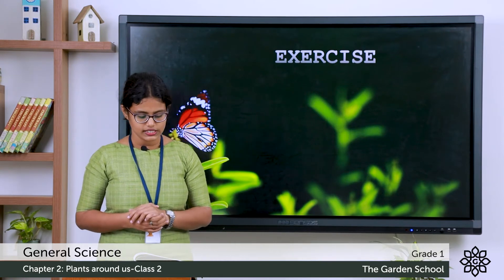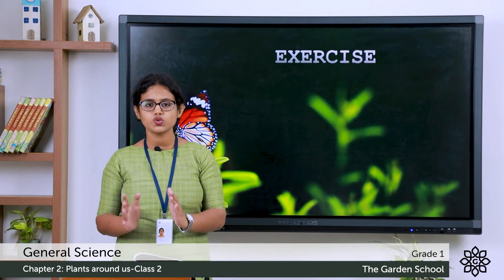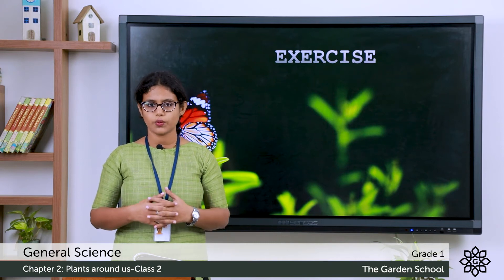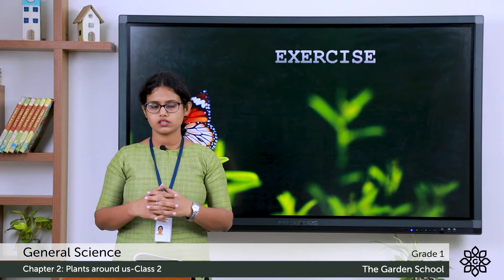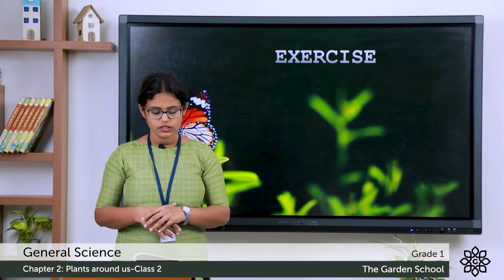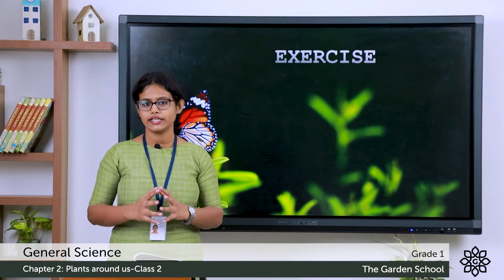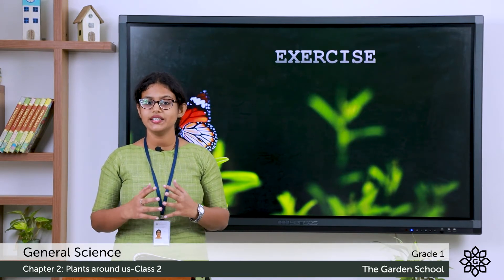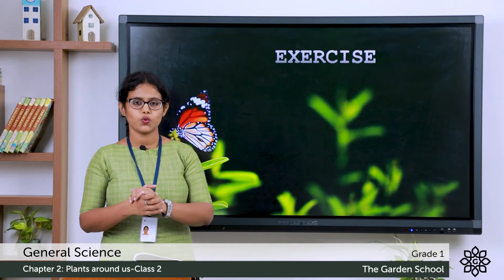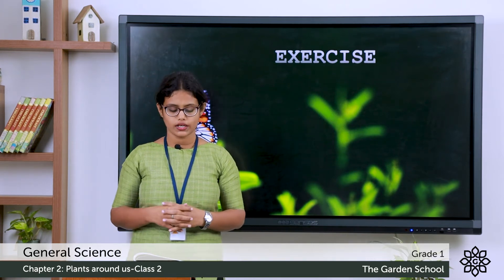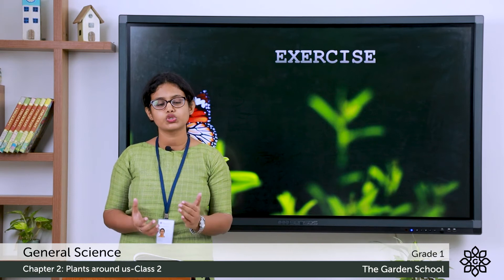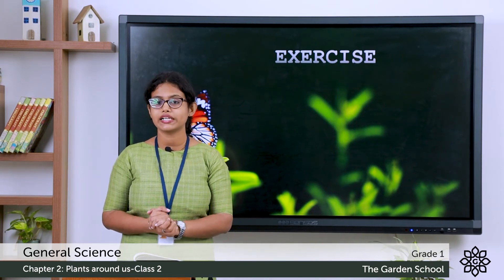Moving on to the second exercise. There are four statements — for the true statement you can tick, and for the wrong ones you can cross. First: some plants grow on land. Yes, there are plants which grow on land, so you can tick that box. Second: plants do not need light. Plants cannot grow without light, so the answer is wrong — you can cross.